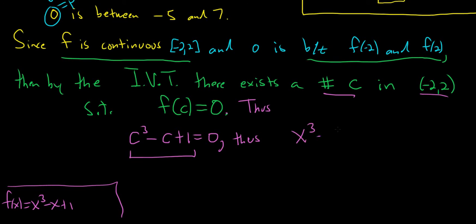Thus, x cubed minus x plus 1 equals 0 has a real solution. So this is typically how you use the Intermediate Value Theorem to prove that equations have real solutions.